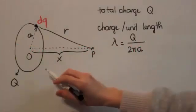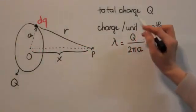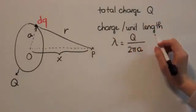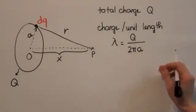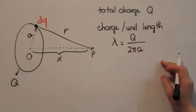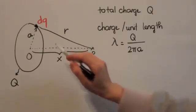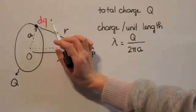How about the electric potential of a charged ring? Suppose that we have a charge ring with total charge Q. We know that the charge per unit length lambda equals Q over 2 pi A, where A is the radius of the ring.